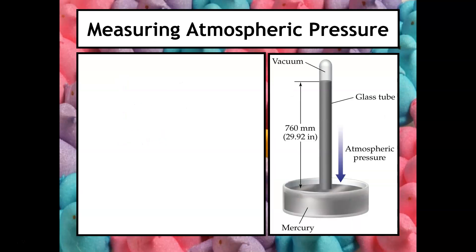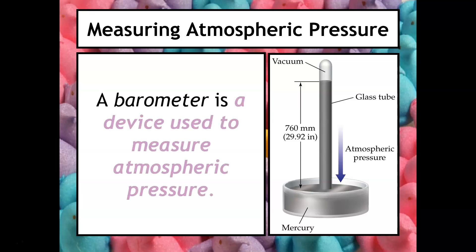When we talk about millimeters of mercury, we are referring to a device called a barometer. A barometer is used to measure atmospheric pressure — it is open to the atmosphere, and the pressure pushing down on the mercury forces it up the tube. The height of the mercury in the tube tells you the pressure.